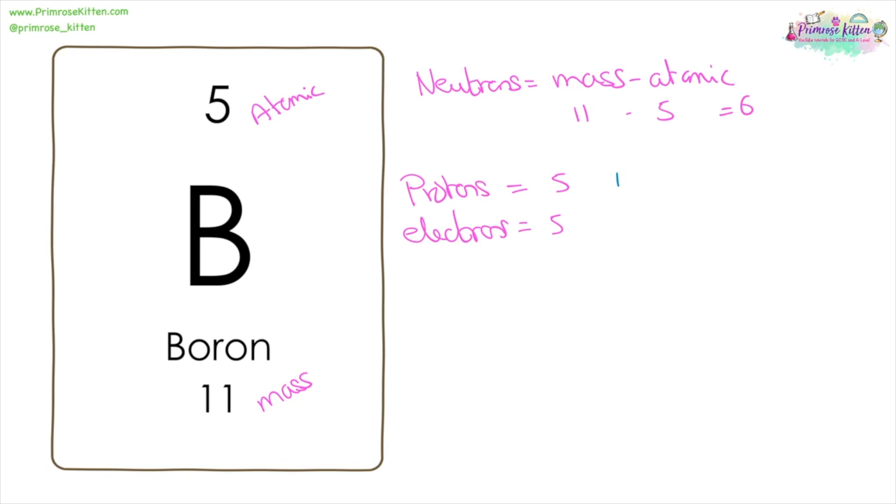Now, protons have a positive charge: one, two, three, four, five. Electrons have a negative charge: one, two, three, four, five. So an atom, and this is for an atom only, will have the same number of positive charges and negative charges, which means there is going to be no overall charge in an atom.